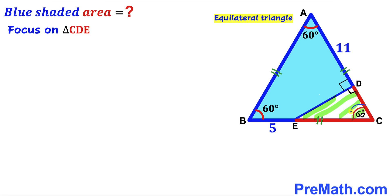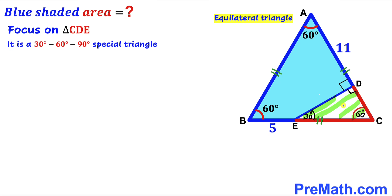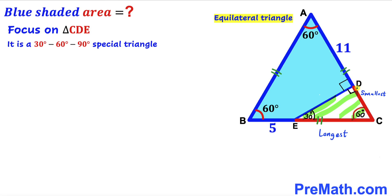In triangle CDE, one angle is 60 degrees and one angle is 90 degrees, so the third angle must be 30 degrees. Therefore, triangle CDE is a special 30-60-90 triangle. The 30 degree angle is the smallest angle and the 90 degree angle is the largest, so the side opposite the smallest angle is the smallest leg.